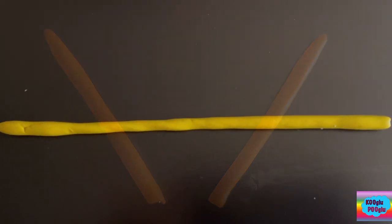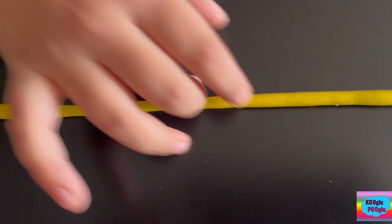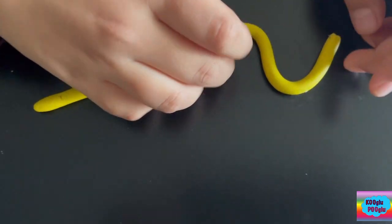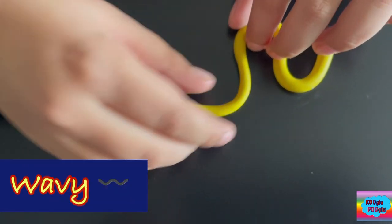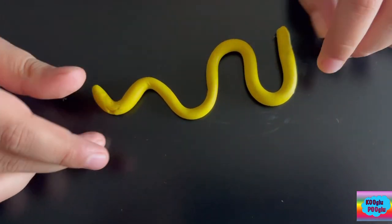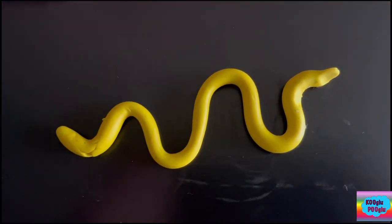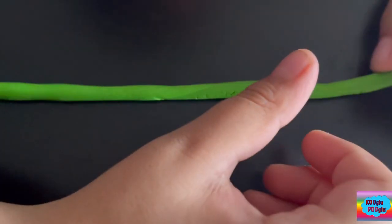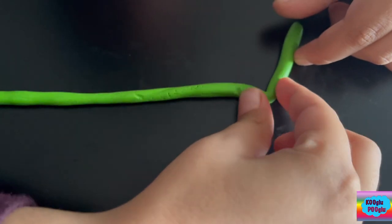We're going to do it yellow, yellow. We're going to make a wavy line. We're making wavy lines. We're going to make a wavy line. This is our wavy line, or my snake. Good boy.